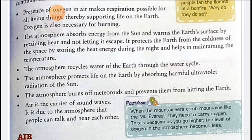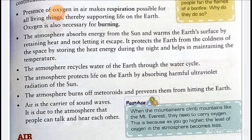Next, the atmosphere burns meteors and prevents them from hitting the Earth. As we have discussed, in the mesosphere all meteors burn up, and because of that they do not reach the Earth's surface. So the atmosphere prevents the Earth from being struck by meteors.